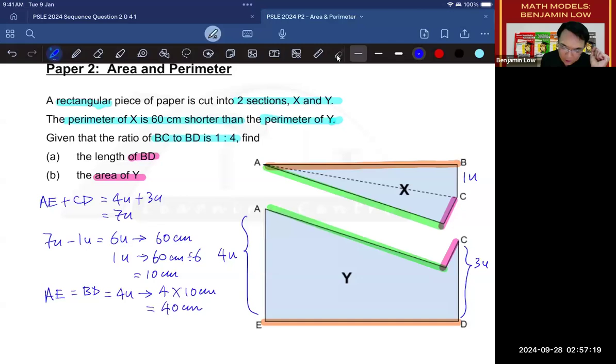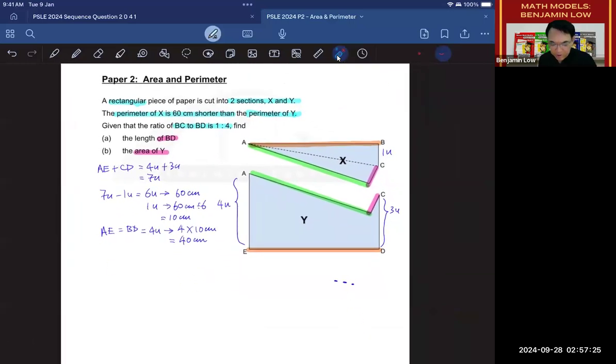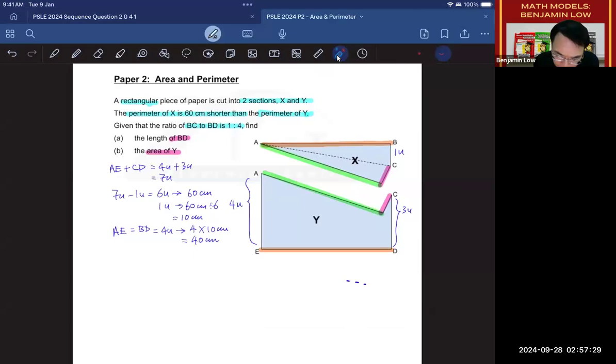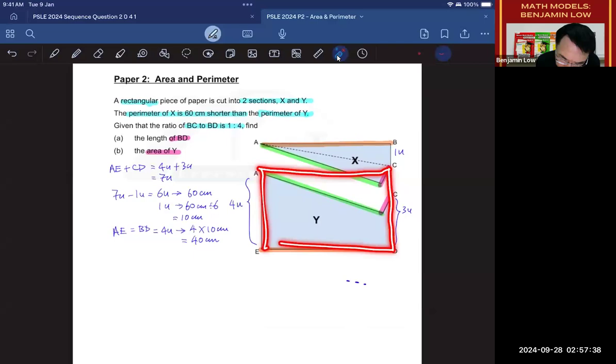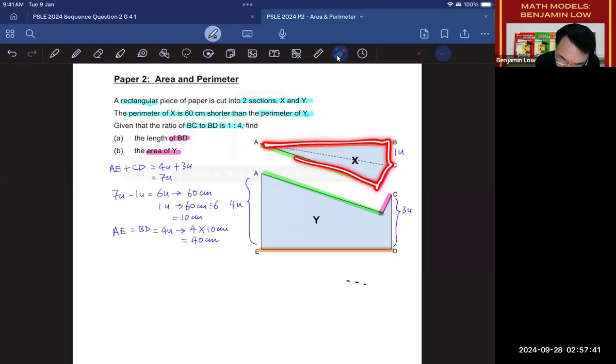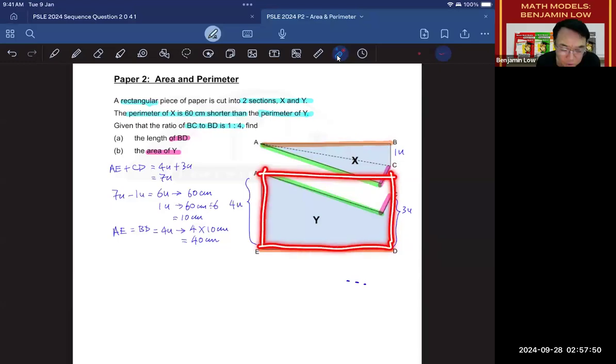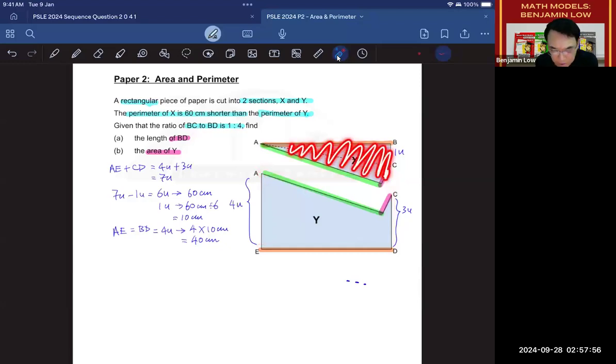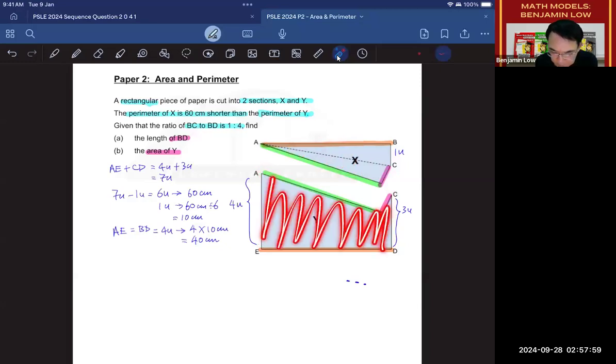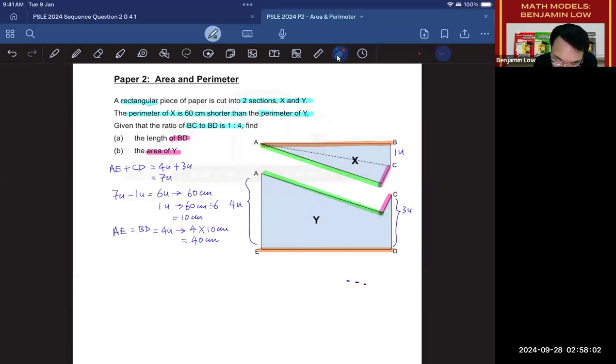Next. The next question is asking you to find the area of Y. Okay, so to find the area of Y, what we need to do is we need to take the area of the whole rectangle like this. In other words, I will have to move this piece back down over here. So if I move this down, I now have a rectangle again. And I need to use the area of the rectangle and subtract away the area of this part to get the area of this part.